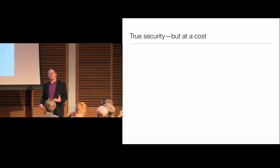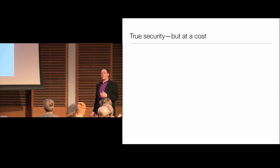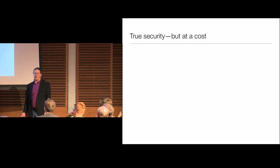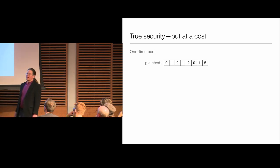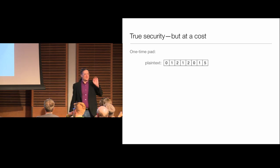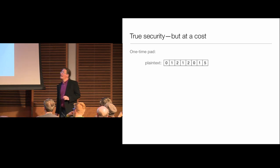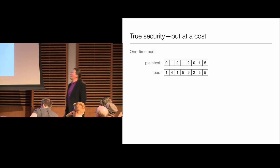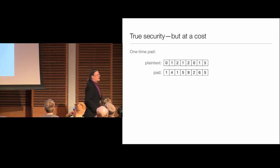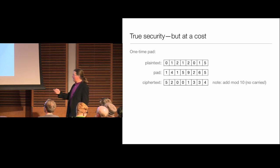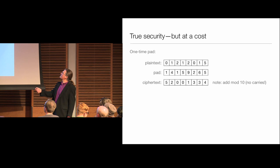Is there any cryptosystem which is truly impossible to break? All the things we've talked about can be broken using more and more clever statistical analysis. There is such a cryptosystem — but you don't get it for free. It's called a one-time pad. Here's our plain text: I want to send you the secret date on which tonight's seminar will take place — January 21st, 2015. Here is our secret key, or the one-time pad: a sequence of completely random digits. To encrypt my message, I add them digit by digit to the message.